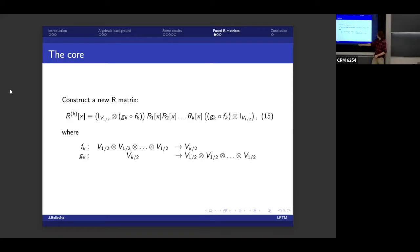What do they do? F, it takes you from the tensor product of a lot of copies of V_{1/2}, and it projects on the subspace of spin k/2. And then G does the opposite. So what does G_k dot F_k do? Well, it's simply, it projects your Hilbert space on the subspace of spin k/2. So essentially what this does, it takes your k R matrices, and it fuses them together, so that now one of them is actually acting on a spin k/2.